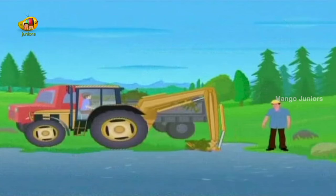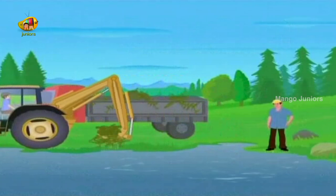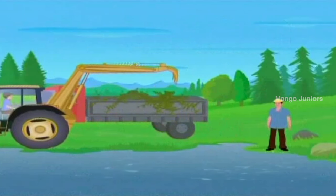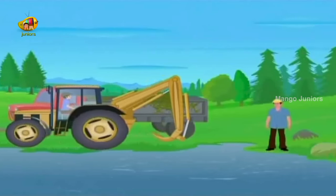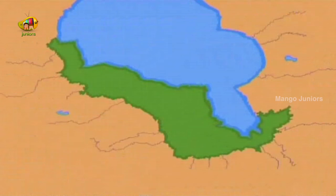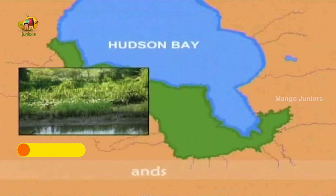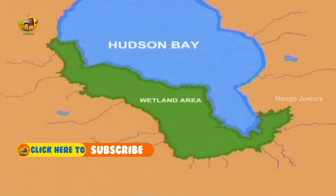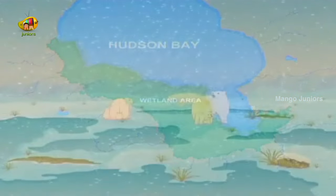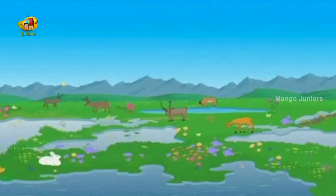We humans have come to realize that besides protecting wildlife, these wetlands purify water and also protect coastlines against erosion and floods. This is Hudson Bay. The lowlands and marshy plains lying south and west of Hudson Bay form one of the world's largest wetland areas. It remains frozen for most of the year and springs to life only during summer.